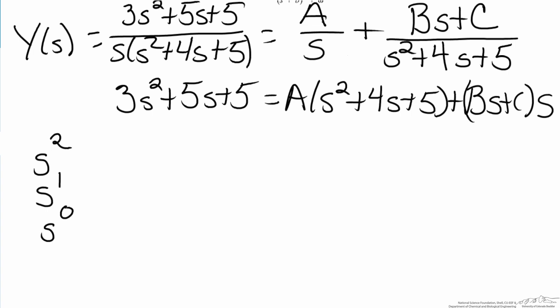If we look at our right hand side, we see that we have an As squared term, and a Bs squared term. If we look at our s terms we have one for A, 4As, and we have one for C, C times s. For constant, the only one we have is 5A.